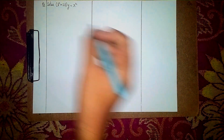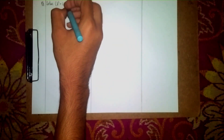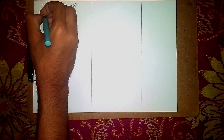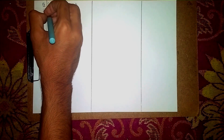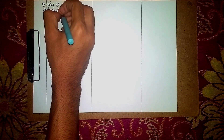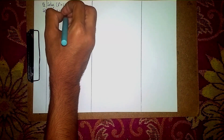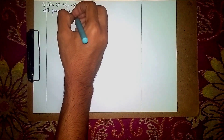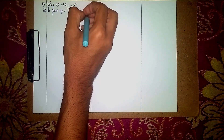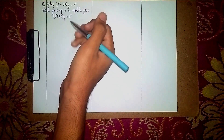Hello and welcome back to my channel. This question solves (D² + 2D)y = x². This is a non-homogeneous linear differential equation. The given equation is written in symbolic form, where D is the differential operator. So write the equation: D² + 2D into y is equal to x².